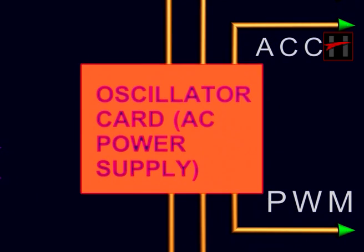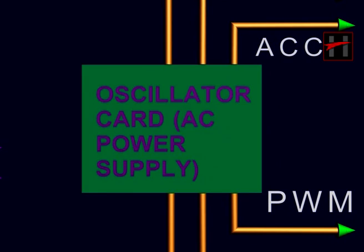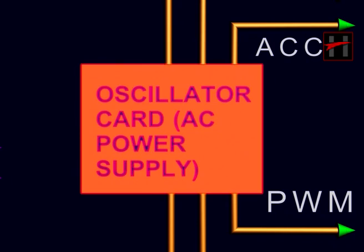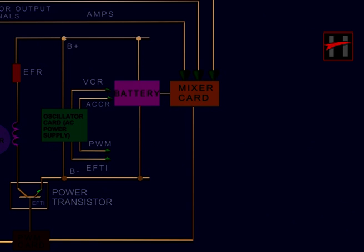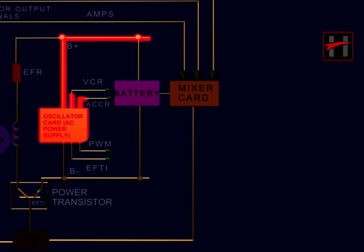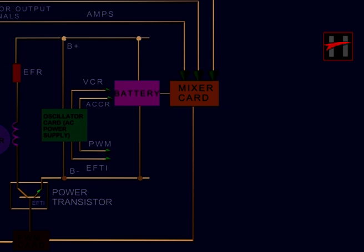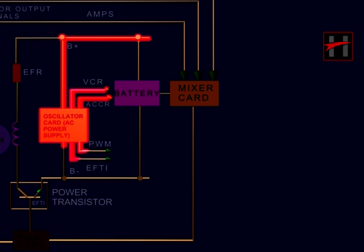The oscillator operates on the DC input voltage supplied from the local batteries. The oscillator supplies AC power for the following control functions: 1) the excitation transistor, 2) the pulse width modulator, 3) the ACCR, and 4) the VCR.